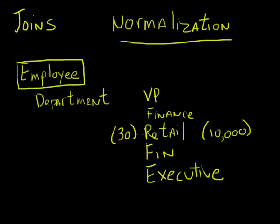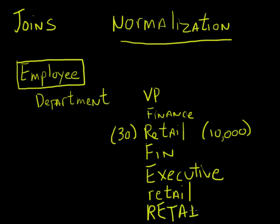It also makes searching a lot easier. I might have somebody who puts in 'retail' with a capital R, and somebody else with a small r. As far as Oracle is concerned, those are two completely different departments. So I'd have to tailor my queries to find 'retail' with a capital R, with a small r, with all capitals. It's much more efficient to store a number associated with that particular department.